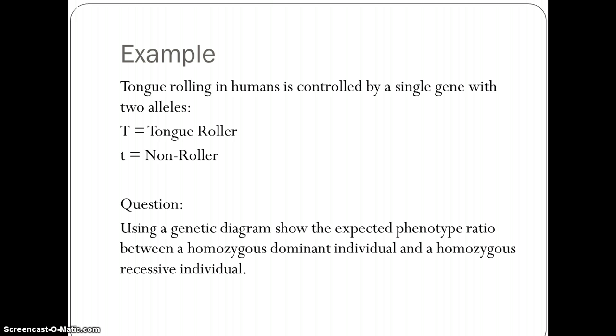Here's an example of a past exam question: Using a genetic diagram show the expected phenotype ratio between a homozygous dominant individual and a homozygous recessive individual.